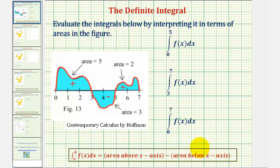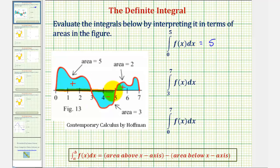Looking at our first integral, we have the integral of f(x) from zero to five, integrating over this interval where we have area both above and below the x-axis. On the interval from zero to three, the value is positive five. Then on the interval from three to five, because the area is below the x-axis, the value would be negative three. So five minus three gives us a value of positive two.